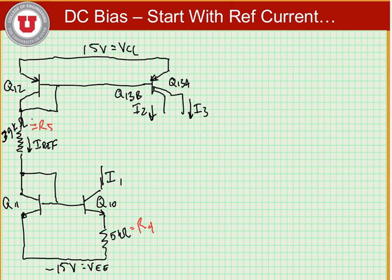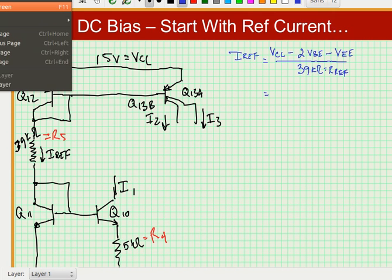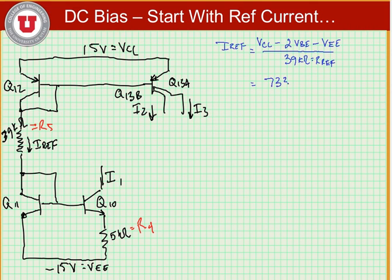Now let's start with our reference current. We see here that we have a reference current that's equal to VCC minus 2 times VBE, which come from the diode connections at Q12 and Q11, minus VEE divided by the reference resistance, which is 39 kilo ohms. And if we solve this, we find that this current is equal to 733 micro amps.